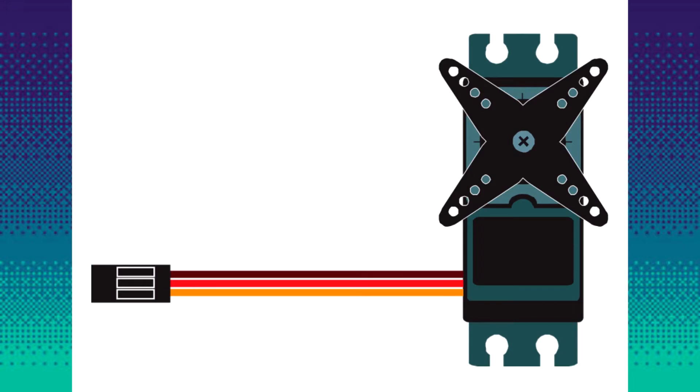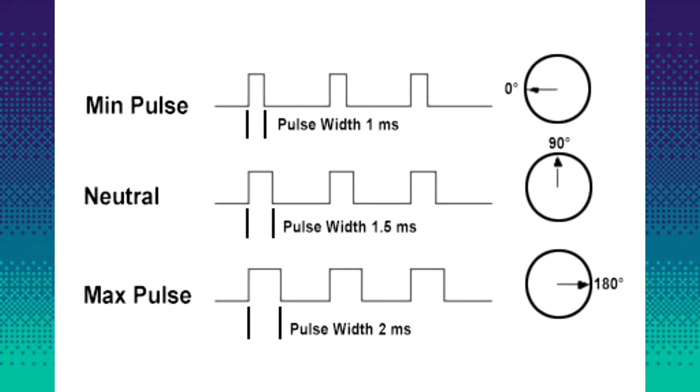Servos are controlled by sending an electrical pulse of variable width, or pulse width modulation, which is also known as PWM. There's a minimal pulse, a maximum pulse, and a repetition rate.